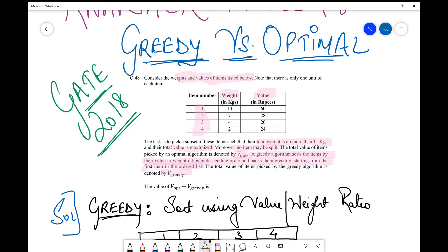Then the value of V_opt minus V_greedy is you need to find the value of V_opt minus V_greedy. Now important recall back of greedy and optimal algorithm. What is the basic difference between both of them?